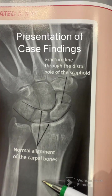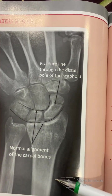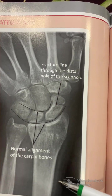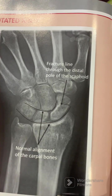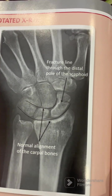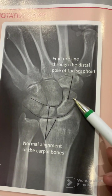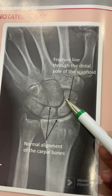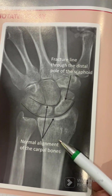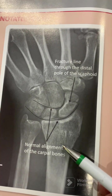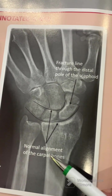We will present our finding: this is a single AP view of the wrist of a skeletally mature patient. The x-ray is adequately exposed with no important areas cut off. There is a transverse fracture through the distal pole of the scaphoid bone. On this x-ray, the fracture appears to be minimally displaced and the alignment of the other carpal bones is normal.